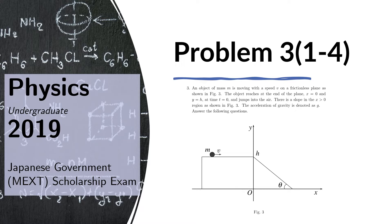Problem 3. An object of mass m is moving with a speed v on a frictionless plane as shown in figure 3. The object reaches the end of the plane at x equals 0 and y equals h at time equals 0 and jumps into the air. There is a slope in the positive x region as shown in figure 3. The acceleration of gravity is denoted as lowercase g.